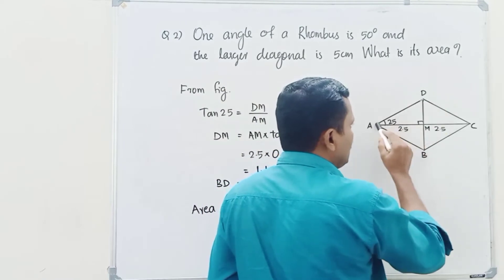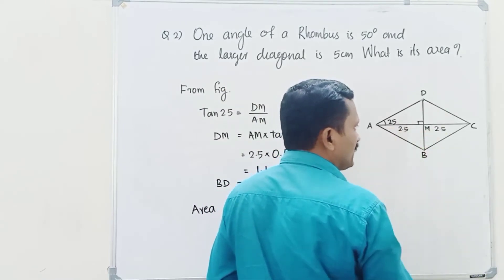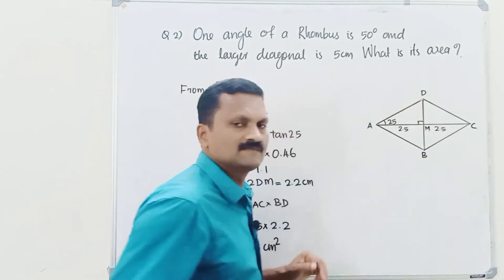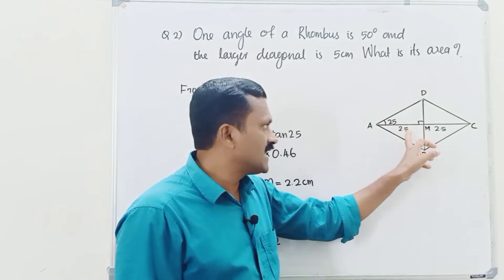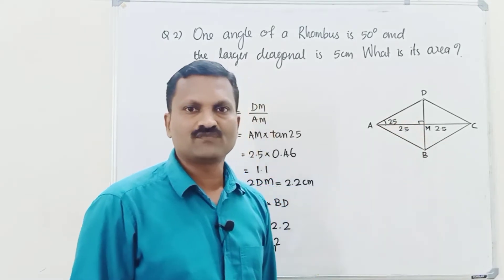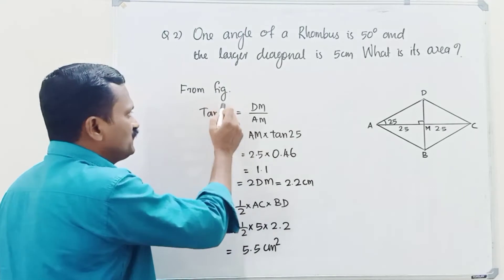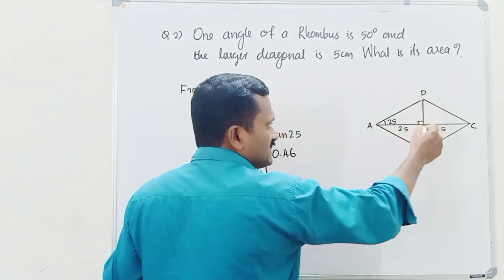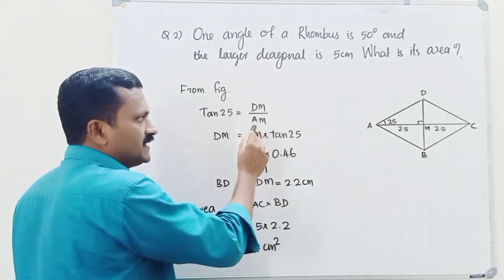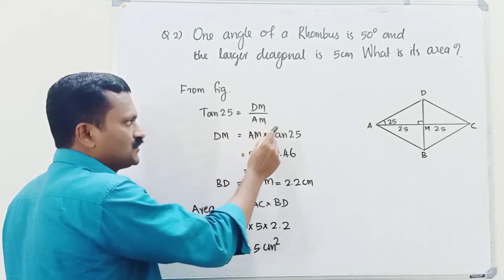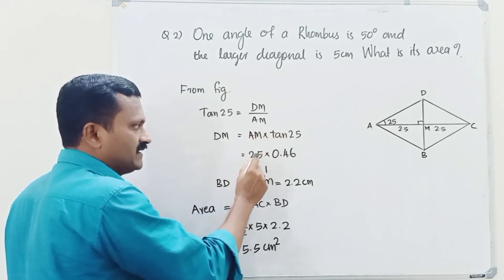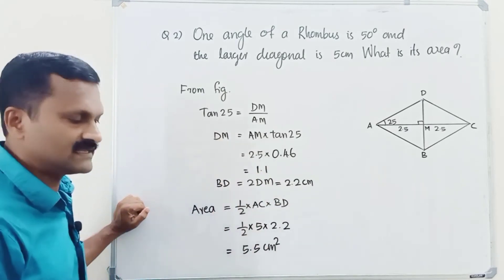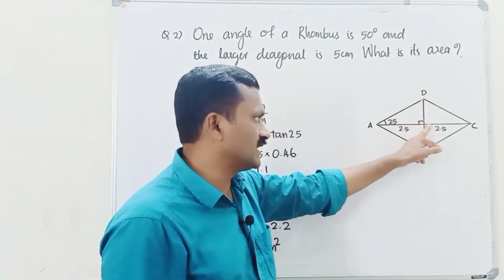So in the figure, angle DAM is 25 degrees. Also, triangle DMA is a right triangle. One angle is given and one side of the diagonal is 2.5 centimetres. From the figure, tan 25 equals opposite side divided by adjacent side, that is DM by AM. Therefore, DM equal to AM into tan 25, that is 2.5 into 0.46, which equals 1.1 centimetres. So DM is 1.1 centimetres.